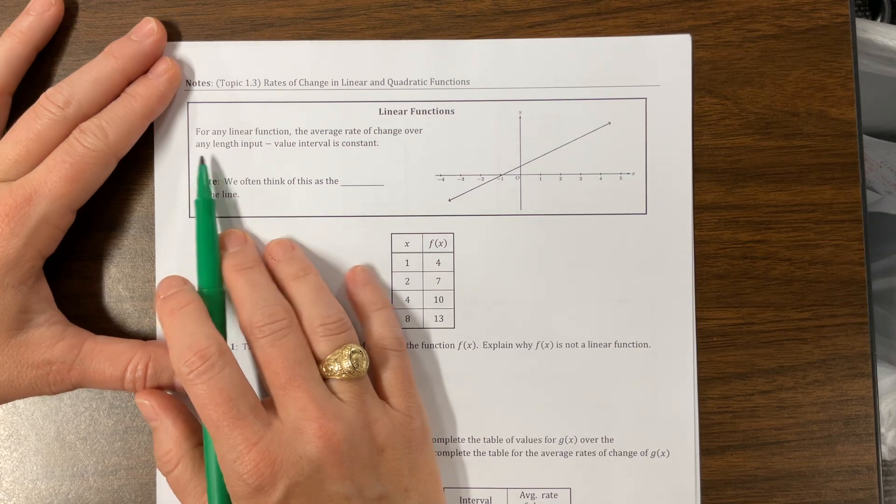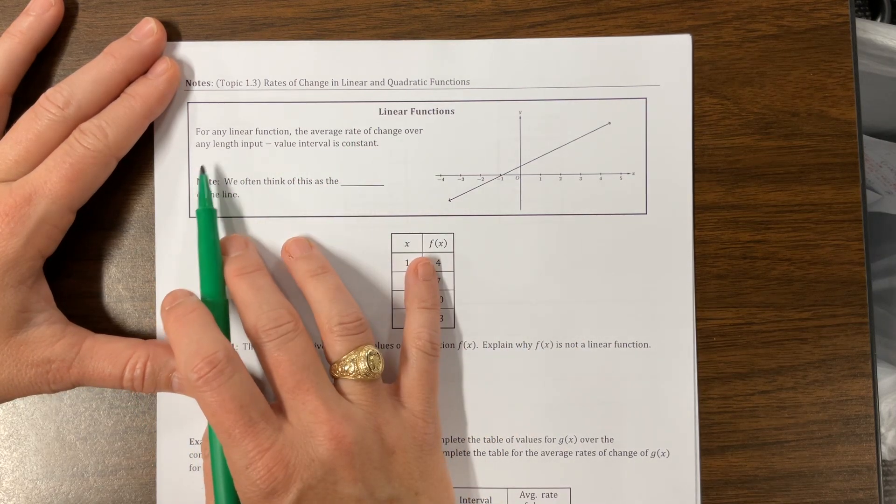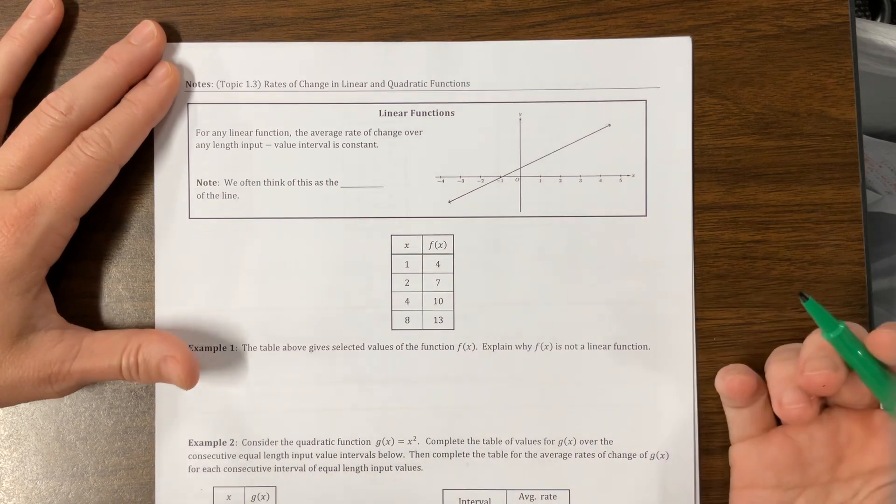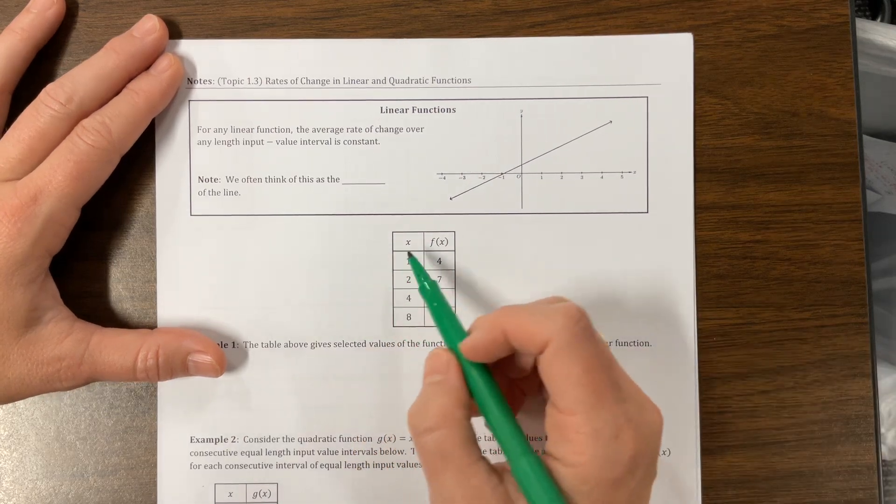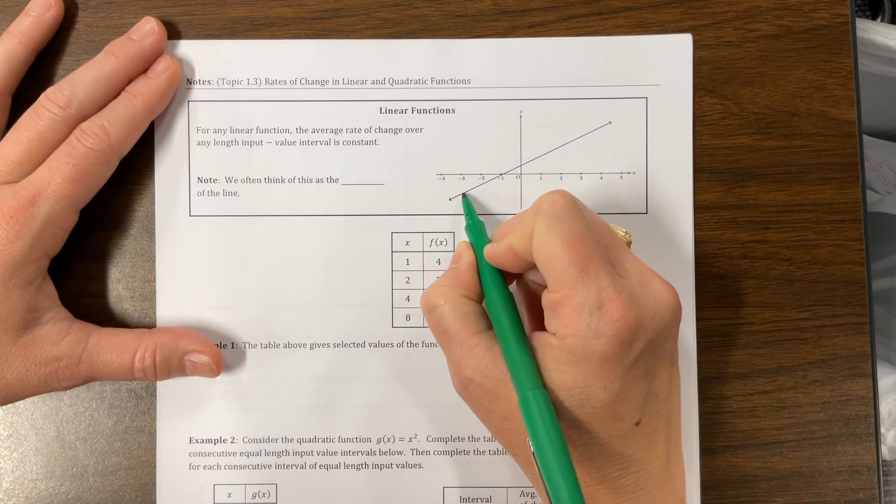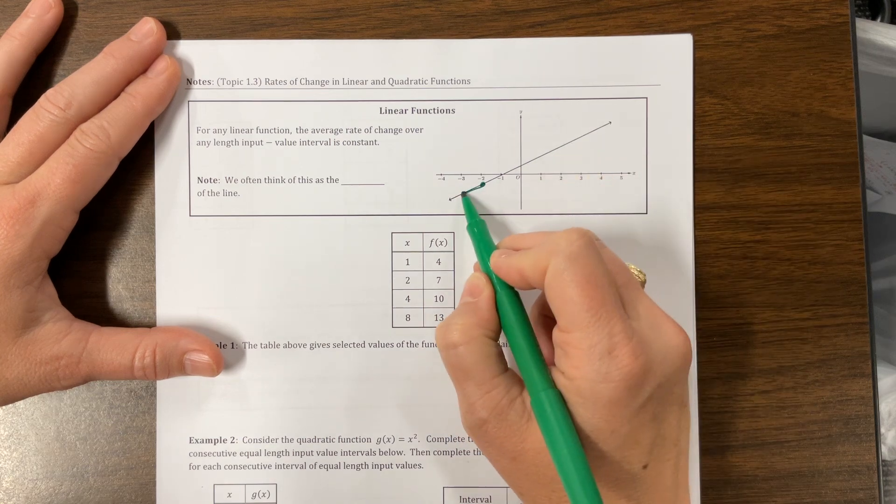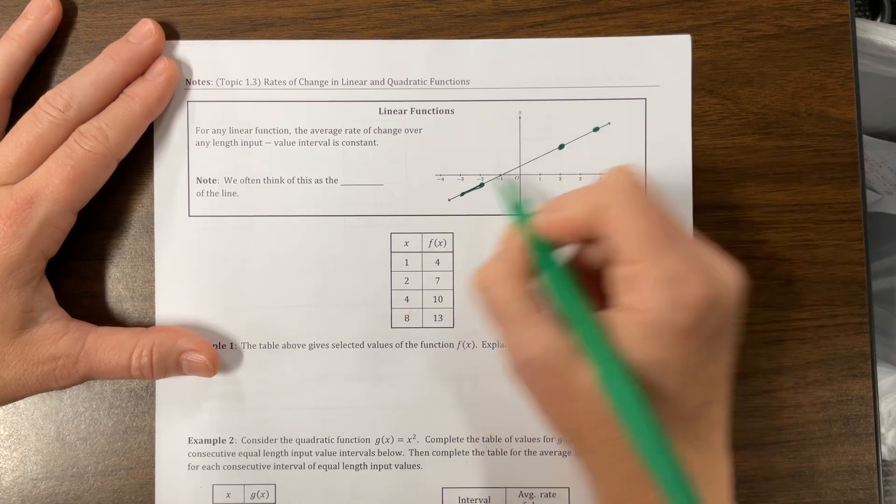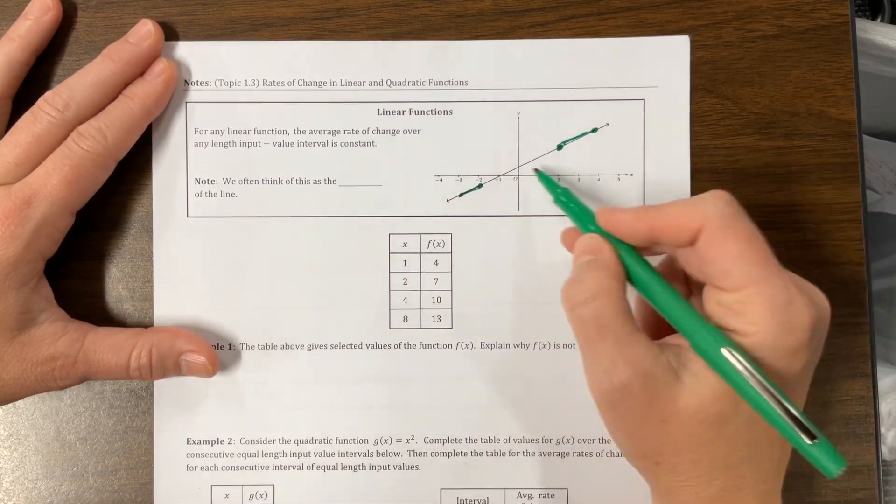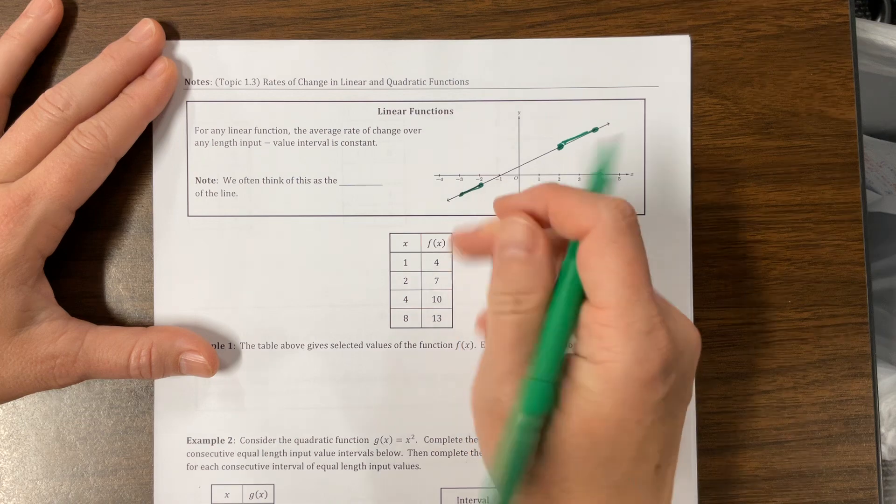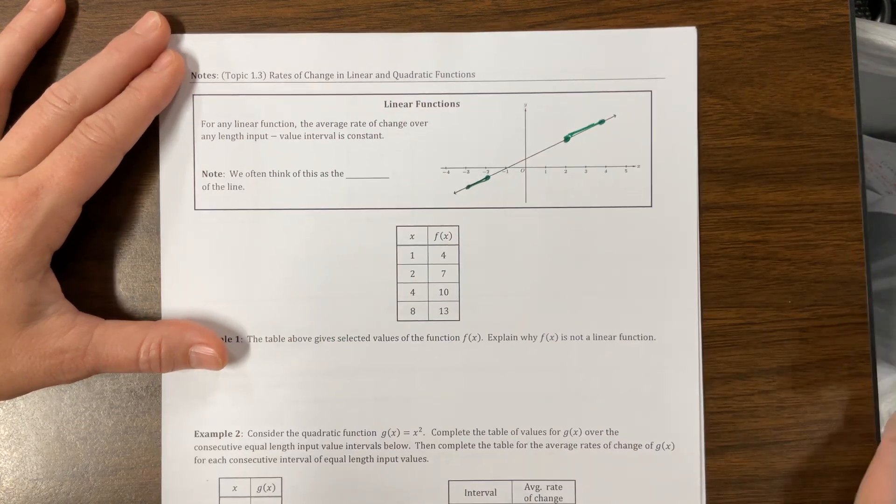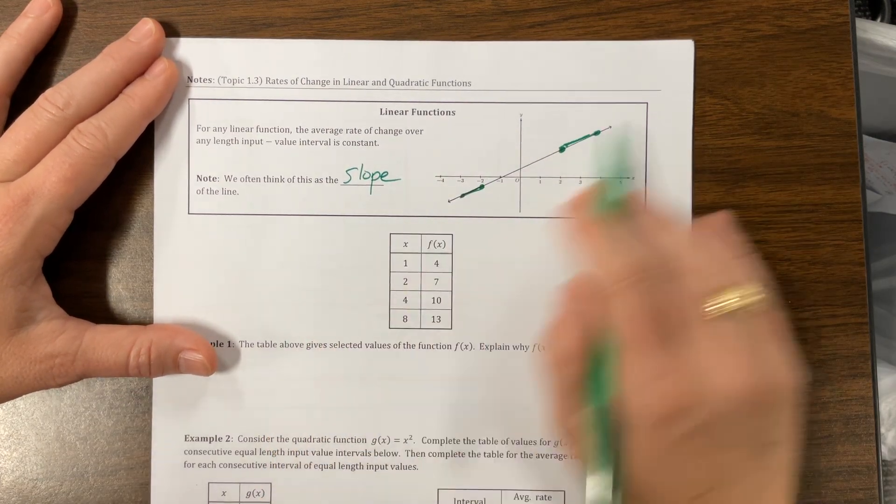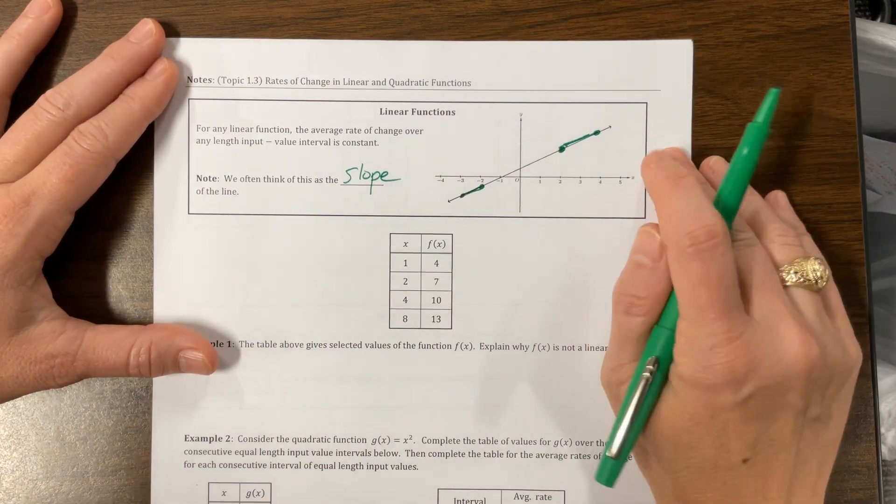For any linear function, the average rate of change of any length input value interval is constant. If you think about it, if I want to find the average rate of change from this point to this point, that average rate of change ends up being the slope of the line. If it's linear, the slope of the line is constant the whole time. So if we have a constant rate of change, then we know our graph is linear.